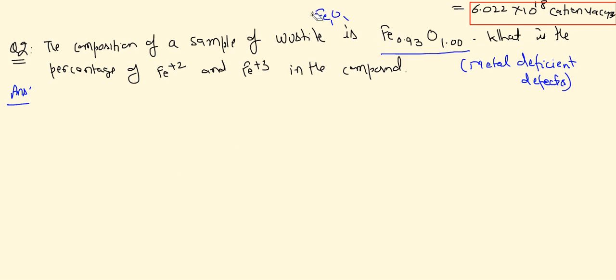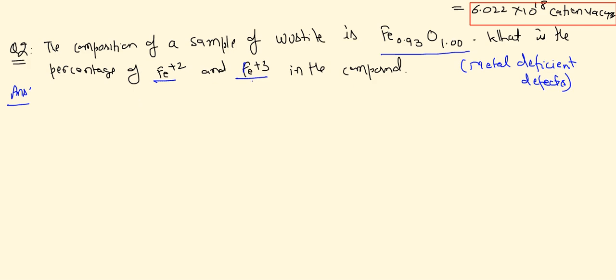One thing studied in defects is maintaining electrical neutrality. Here, some Fe²⁺ ions change to Fe³⁺ ions to compensate for the reduced positive charge. The question asks: how many Fe²⁺ and Fe³⁺ ions are present if FeO is written as Fe₀.₉₃O₁.₀₀?